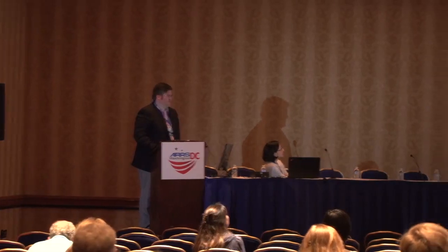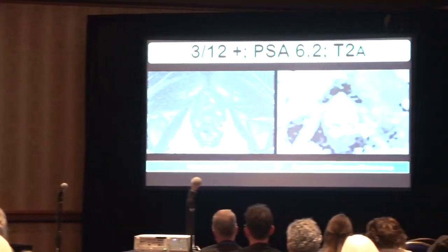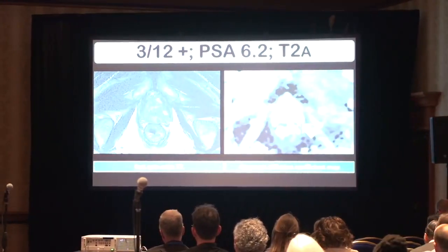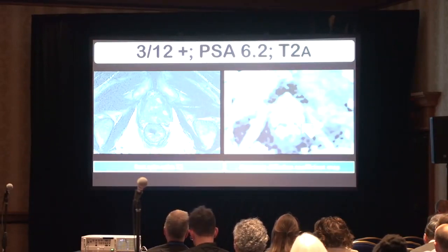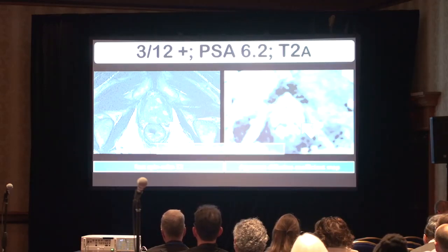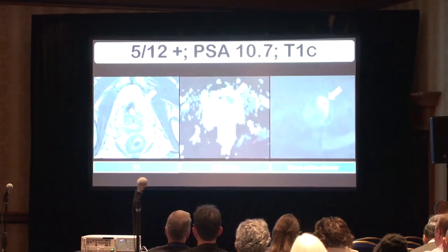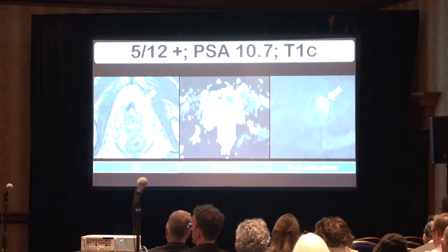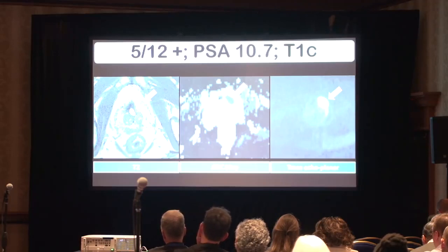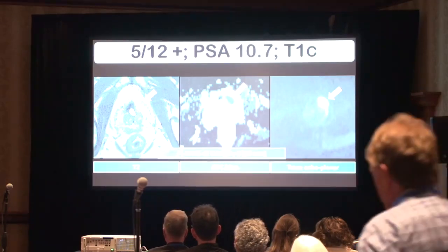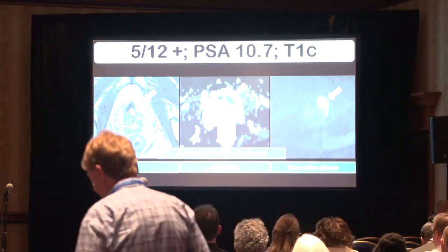Here we have a couple of examples from the paper. This patient had a T2A tumor, PSA of 6.2, and 3 positive biopsies. On the FASPEN T2 echo and the ADC map we can see the lesion within the left aspect of the prostate — this received a PI-RADS version 2 category 2. The next case had 5 positive biopsies, PSA of 10.7, and the tumor was T1C. The tumor is present on T2, trace echoplanar, as well as ADC, and this patient received a PI-RADS version 2 category of 5 with a tumor size of 18 millimeters.